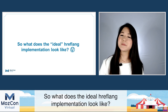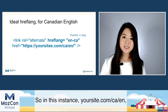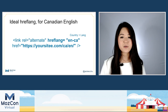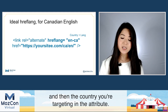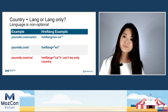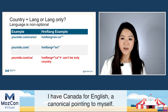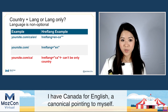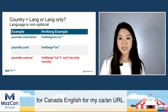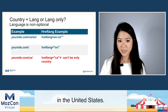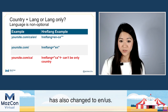What does the ideal hreflang implementation look like? Here's an example of one tag for Canadian English. In this instance, yoursite.com/ca/en — I'm targeting this towards English, Canada. The order is also important: language goes first, then the country you're targeting in the attribute. Here I have Canada English with a canonical pointing to myself, plus the hreflang tag for Canada English for my CA/EN URL.